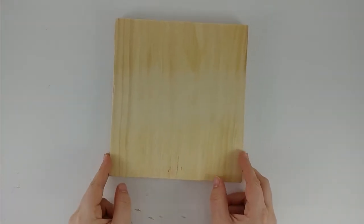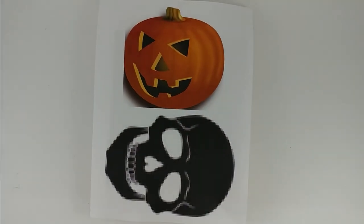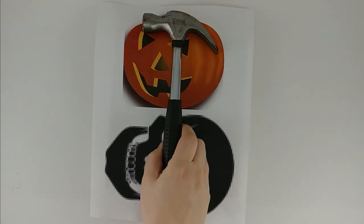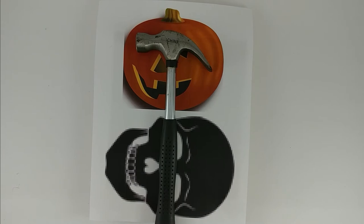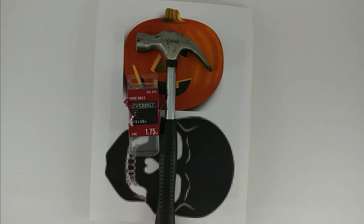You need a piece of wood, a template, a hammer, and some nails. These are actually called wire nails or brads. They were in the specialty nail section in the nail aisle at Home Depot. It was $1.50 for that box.